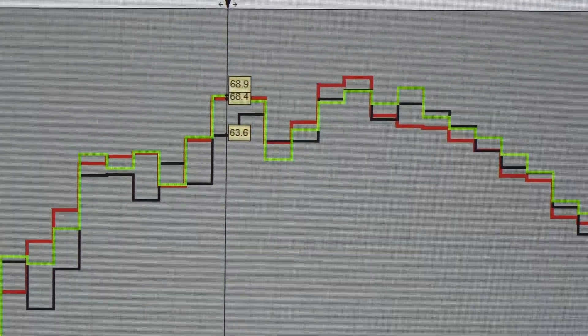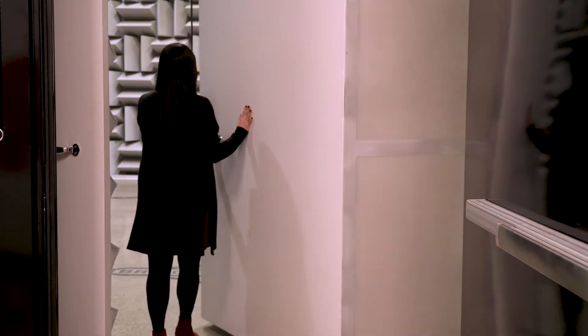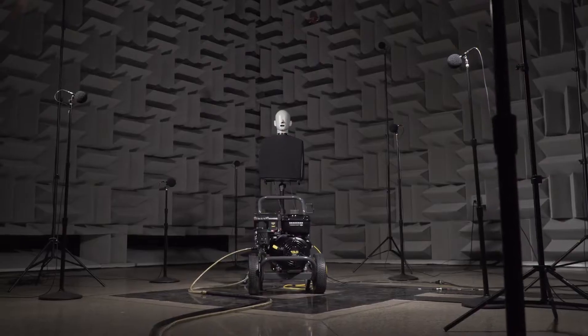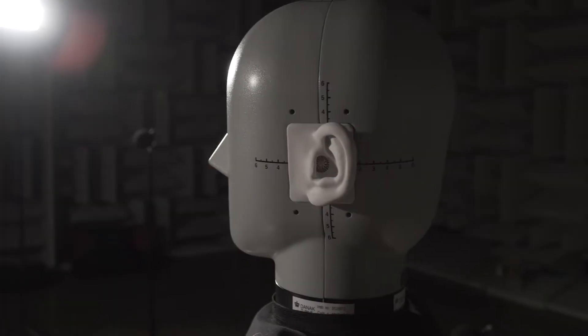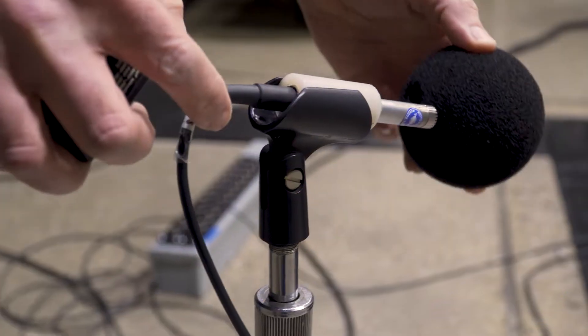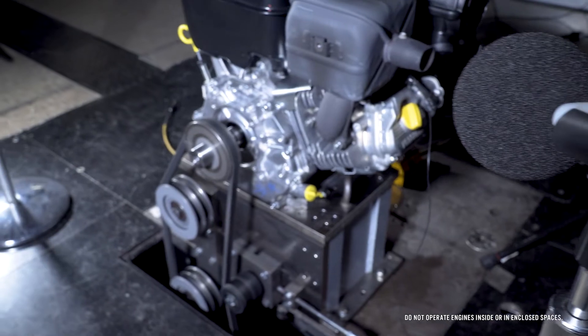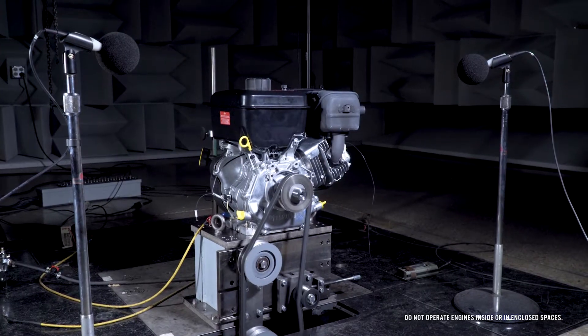The heart and soul of NVH testing is the sound lab, with two separate rooms designed to absorb sound reflection and create a perfectly silent environment. Sensitive sound equipment measures the sources of noise: exhaust, intake, fan, and mechanical.